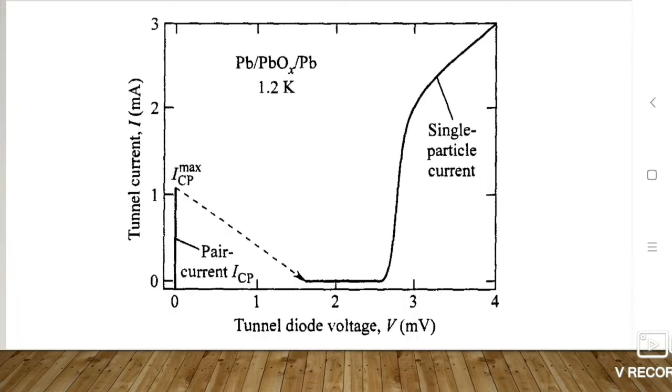This is the VA characteristic curve, which shows the VA characteristics of a Josephson tunneling diode.